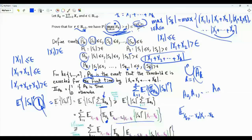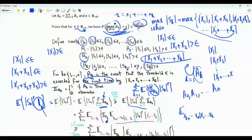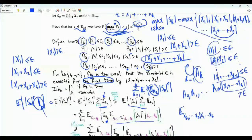If we know X_1, ..., X_k, we are certain whether event A_k is true or false. Event A_k is true if |S_1|, ..., |S_{k-1}| are all ≤ epsilon but |S_k| > epsilon; otherwise A_k is false. We don't need to know anything about X_{k+1}, ..., X_n. By fixing X_1, ..., X_k, this indicator is fixed and can be taken outside the conditional expectation.